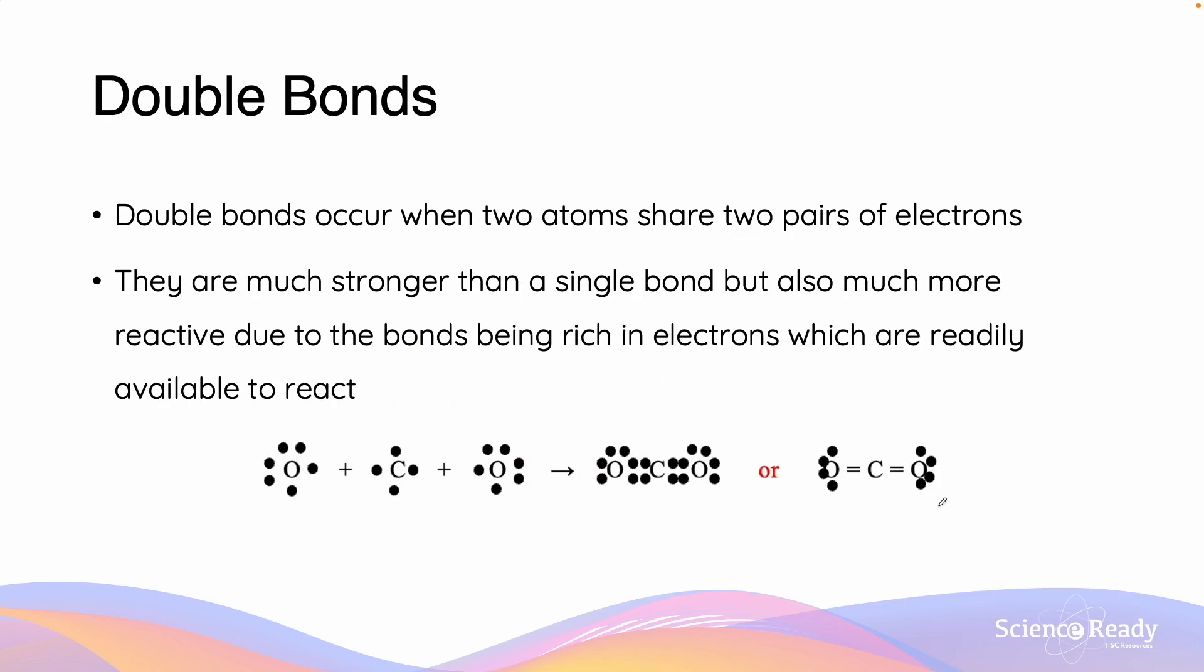Now double bonds will occur when two atoms are sharing two pairs of electrons. As we will expect, double bonds are going to be much stronger than the single bond. But at the same time, they're also going to be much more reactive, and that's because the bonds are rich in electrons.